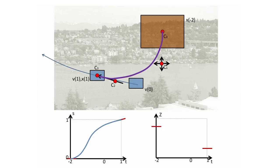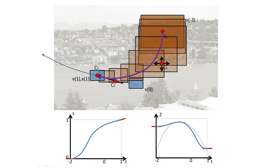For zooming, Igarashi showed how to maintain constant visual motion. We try to use this while still matching the zooming end conditions. This produces this modified sequence of views.